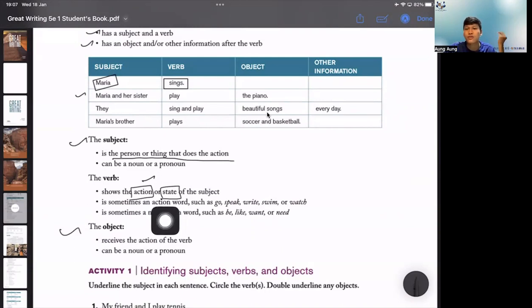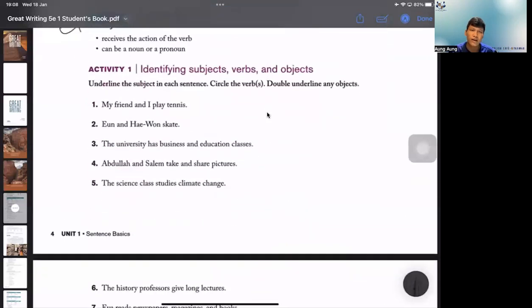Now let's identify the parts. Number one: 'My friend and I play tennis.' The action is 'play,' so that's the verb. The subject comes first - 'my friend and I.' That's the subject.